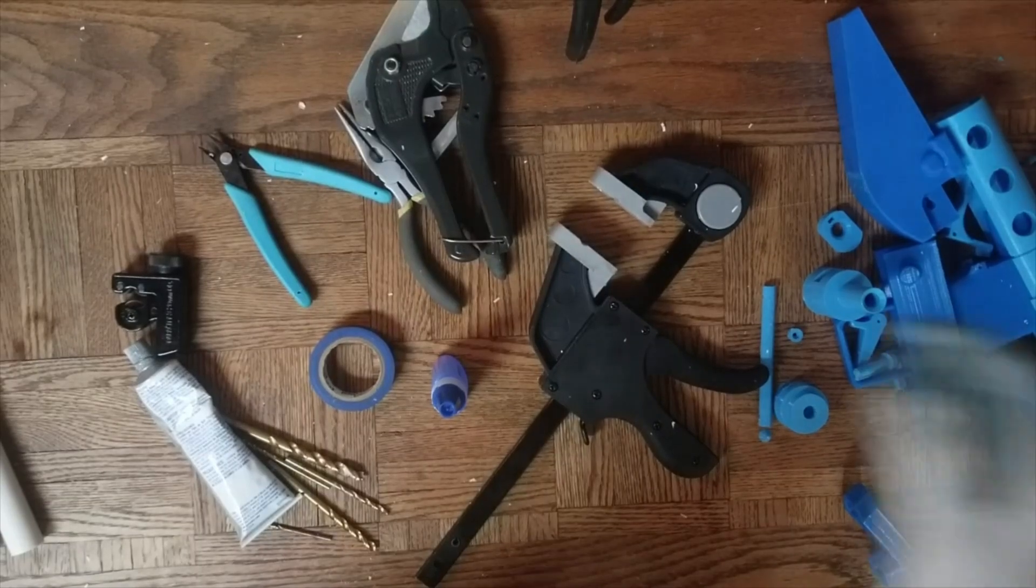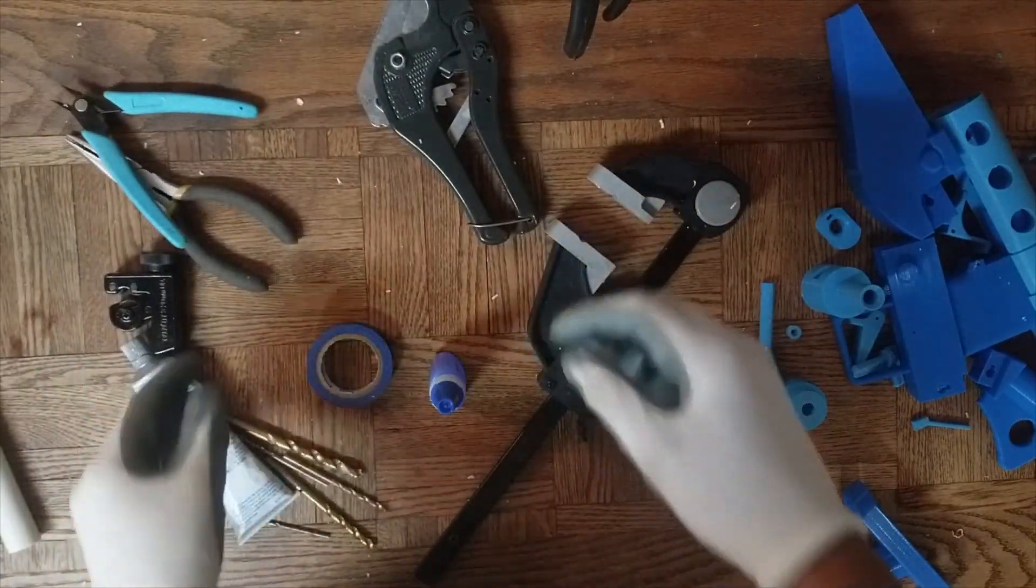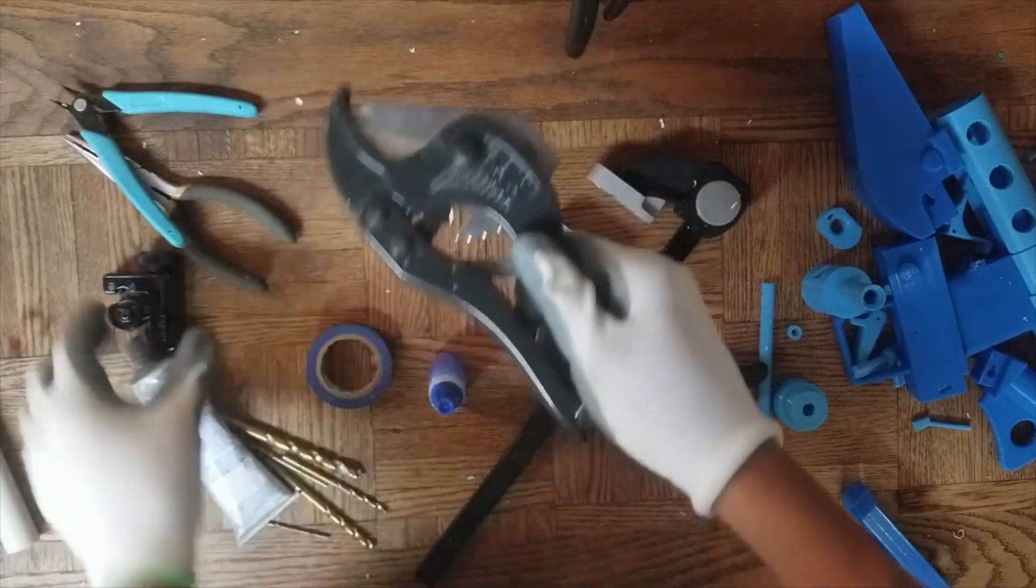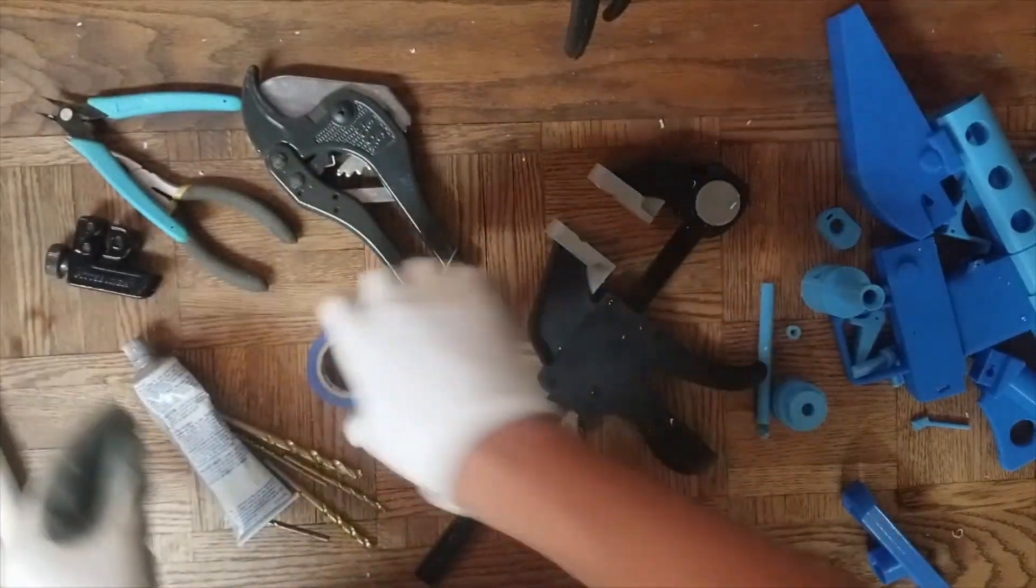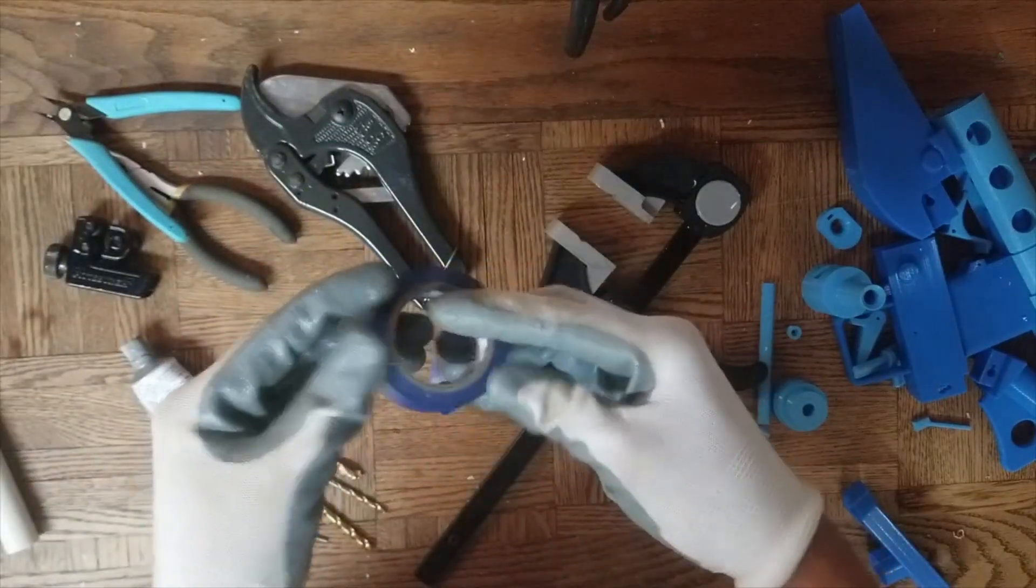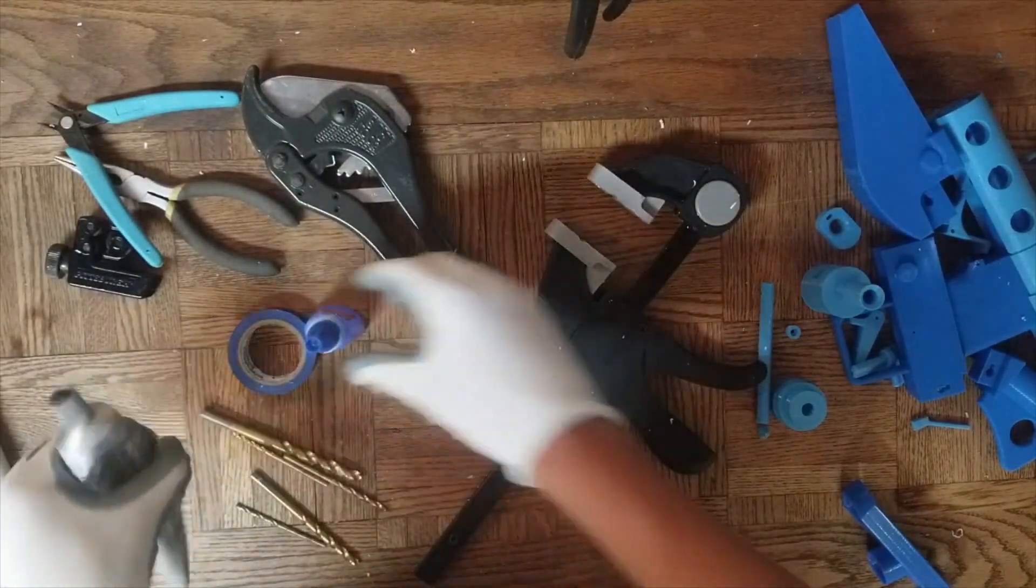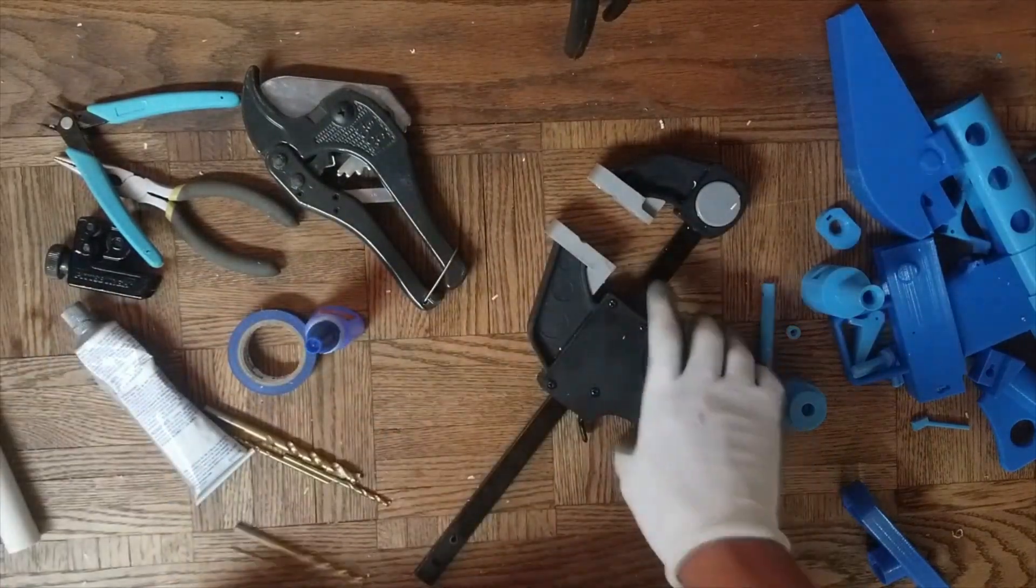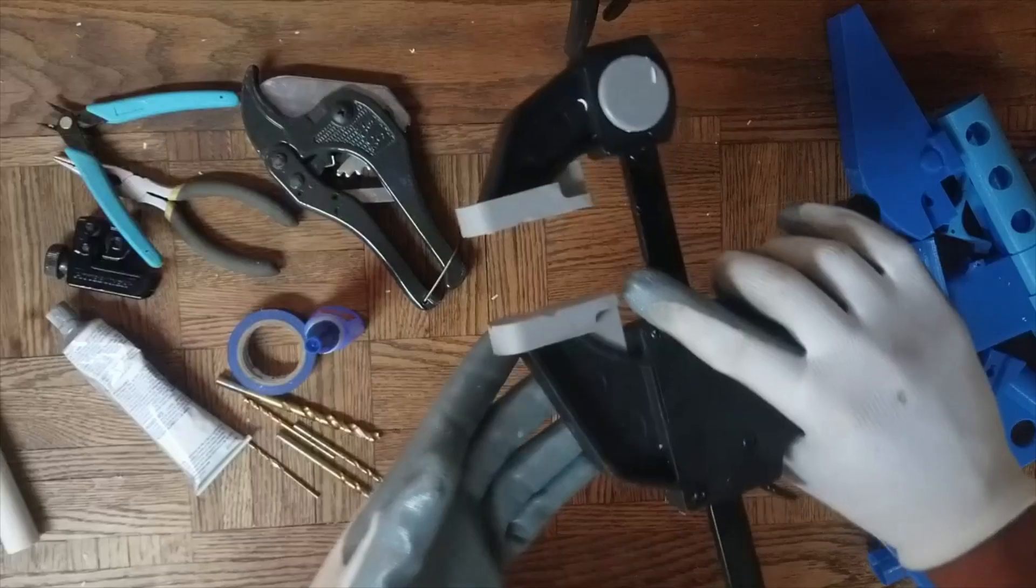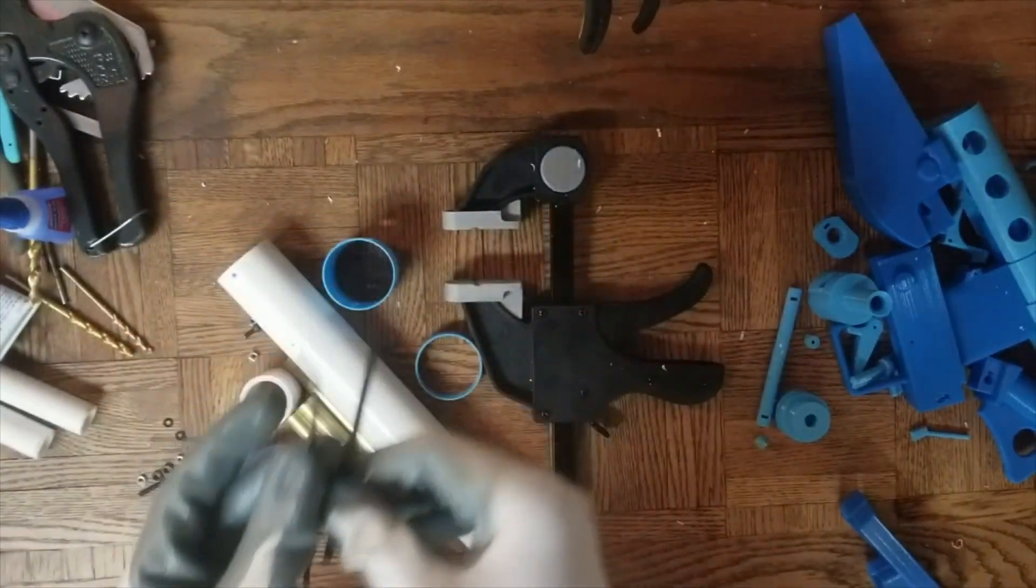There's some stuff you need. Pliers and flush cutters are always useful and nice for the filament pins. PVC cutters to cut the PVC, pipe cutters to cut the brass, tape to secure the brass or PVC, super glue, grease for the O-rings, and various amounts of drill bits. I also highly recommend clamps. You'll also need M3 and M4 Allen wrenches.